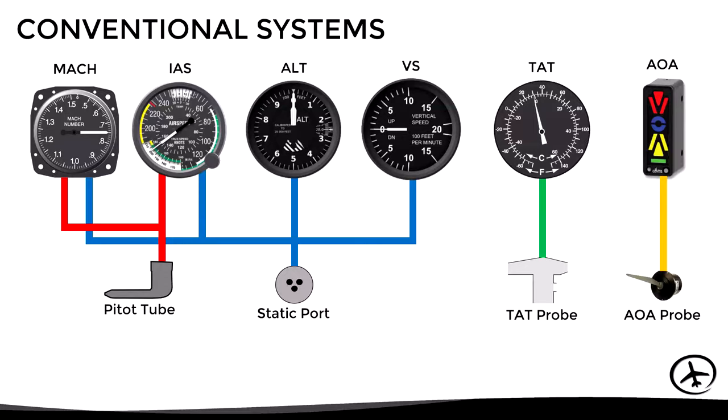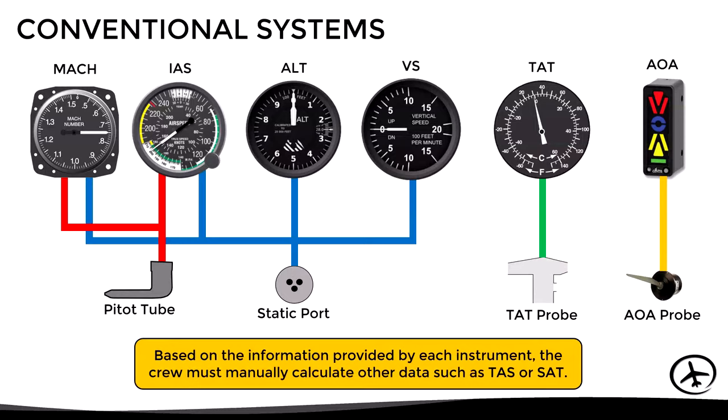In a conventional analog instrument system, each sensor sends the information directly to the relevant instruments, either by means of pneumatic lines that transmit the pressure directly — as in the case of the pitot tube or the static port — or by means of electrical connections, as in the case of the total air temperature probe and the angle of attack probe. Each instrument is independent, and the information it displays is isolated from the rest.